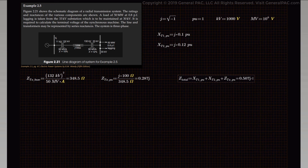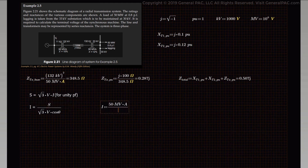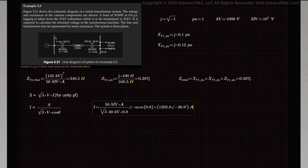Next, we will determine the current that should be flowing in the power system and into the load if the load has to be maintained at 30 kV. The apparent power equals the square root of 3 times the voltage times the current. We rearrange this formula and add the power factor correction: current equals apparent power divided by the square root of 3 times voltage times power factor. With 50 MVA divided by the square root of 3 times 30 kV times 0.8 power factor, we get a current value of 1203 amps at an angle of negative 36.86 degrees.